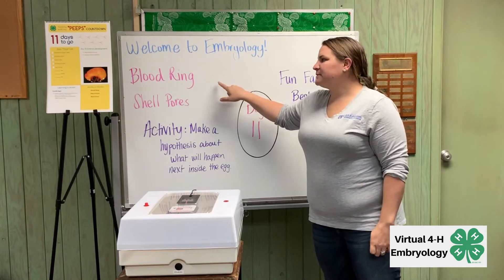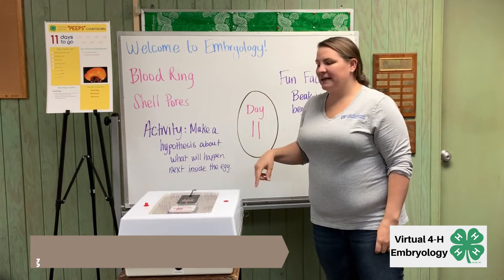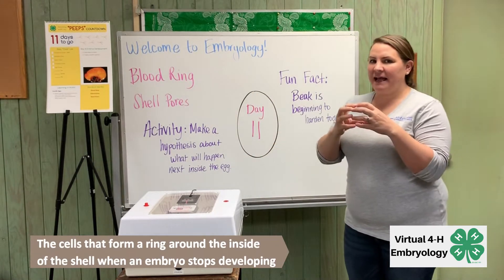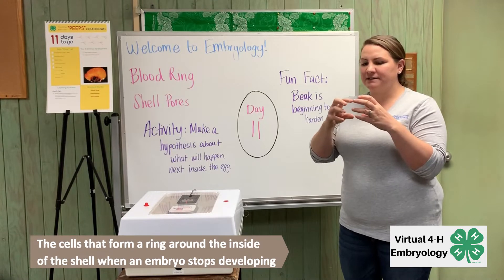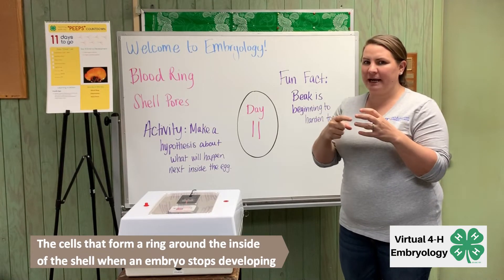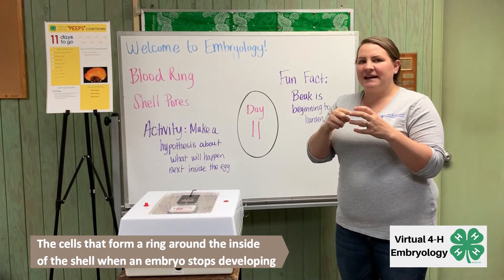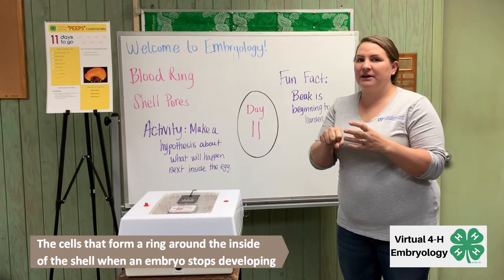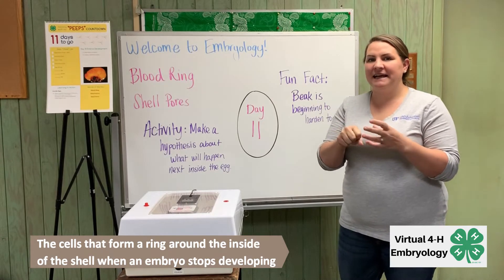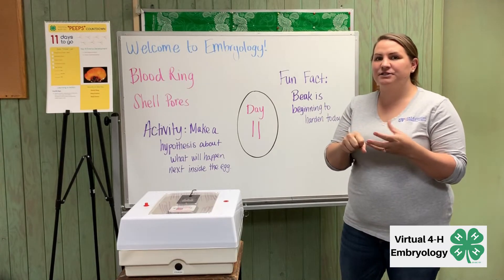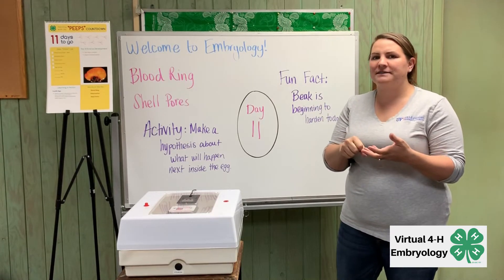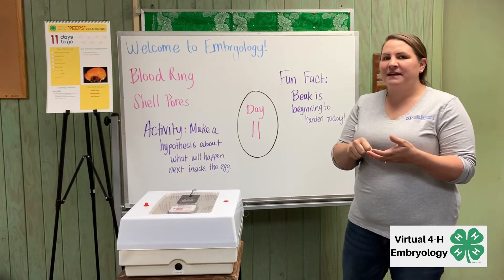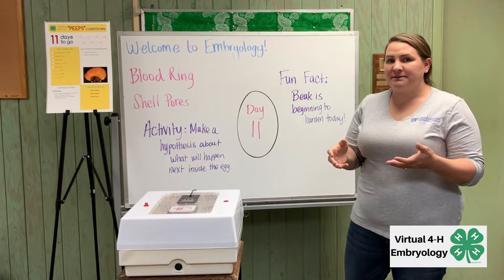The blood ring is what happens when the embryo dies inside of the egg. All of those cells go to create a ring on the inside of the egg that is red, and you can see it when we candle the eggs. It indicates that there's no longer an embryo developing inside of the egg because it has stopped development.